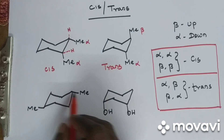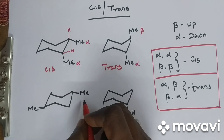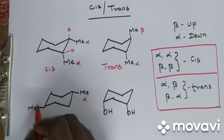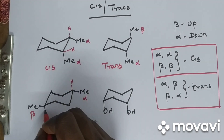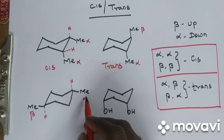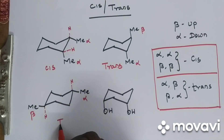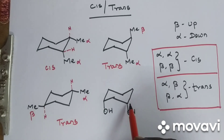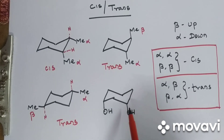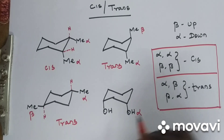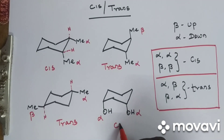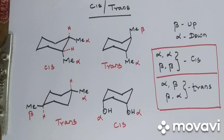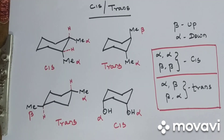In another example, this methyl is above — beta. If we have doubt, draw the hydrogen — alpha. So beta and alpha gives trans. Another example: this methyl is up — beta — draw the hydrogen — alpha. So this is also trans. This is the way we draw cis and trans isomers of cyclohexane.